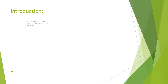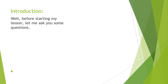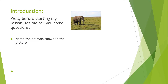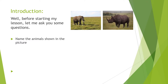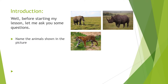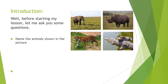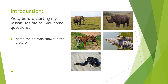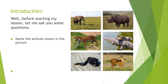Before studying the lesson, let me ask you some questions. The first question is: name the animals shown in the picture. The first animal is an elephant. Second one is a rhinoceros. The third one is a tiger. The fourth one — these are all crocodiles. Then the fifth one is a snake. And the last one is a very popular one we call the musk deer.